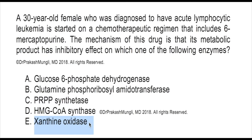This question can be used in two ways. First: 6-mercaptopurine should not be used in patients receiving allopurinol for treatment of gout. Second: the metabolic product of 6-mercaptopurine inhibits enzymes involved in de novo purine biosynthesis — that is glutamine phosphoribosyl amidotransferase — and two other enzymes: IMP dehydrogenase and adenylosuccinate synthetase.